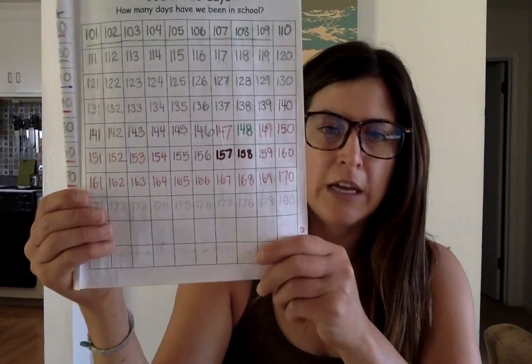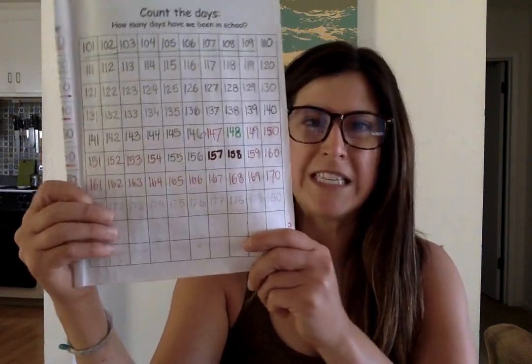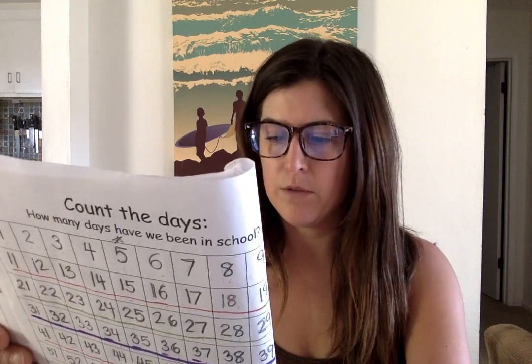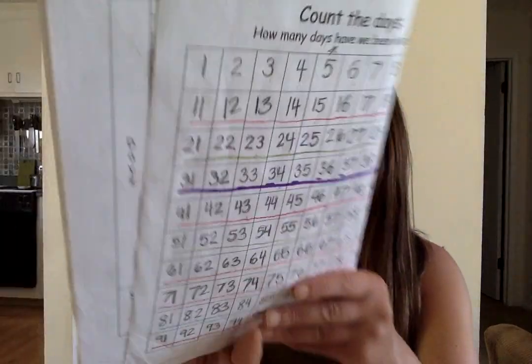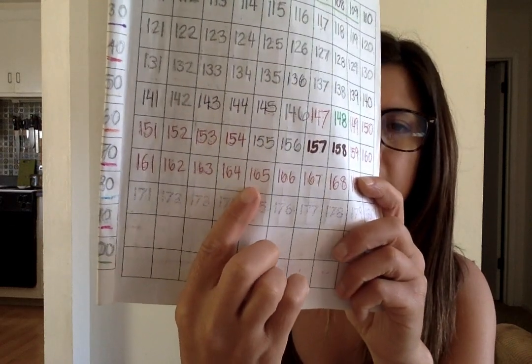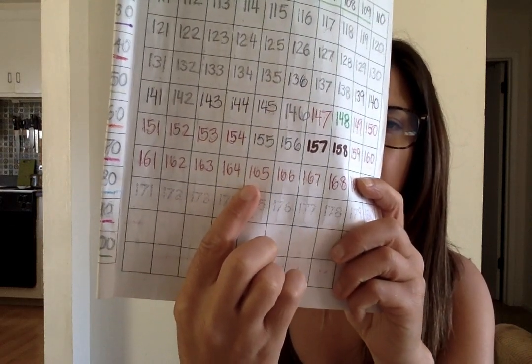Now let's look at numbers over 100. Can you find the number 165? 165 — that's one that we didn't write too long ago. Here it is — it's a one and a six and a five.